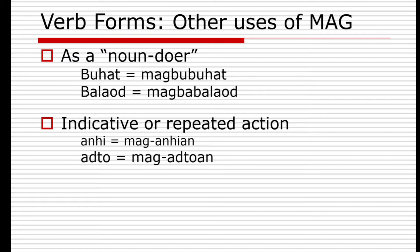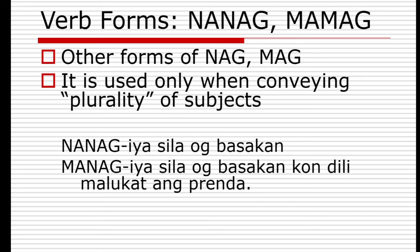'Mag' can also indicate a repeated action — for example, 'mag-anhi' means he has been coming here, 'mag-adto' means he has been going there. For 'nanag' and 'mamag', these are other forms of 'nag' and 'mag' used only when conveying plurality of subjects. For example, 'managia sila og basakan kundili malukat ang trenta' — they are going to own a rice farm.